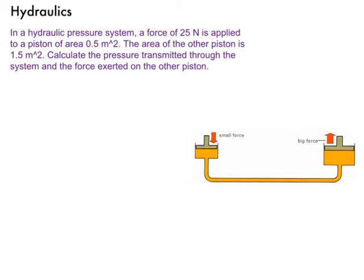So here's a problem you might get in the exam. It says, in a hydraulic pressure system, a force of 25 newtons is applied to a piston with a surface area of 0.5 metres squared. So I've got 25 newtons pushing down onto this piston, the surface area of which is 0.5 metres squared. Then it says the area of the other piston is 1.5 metres squared, OK.